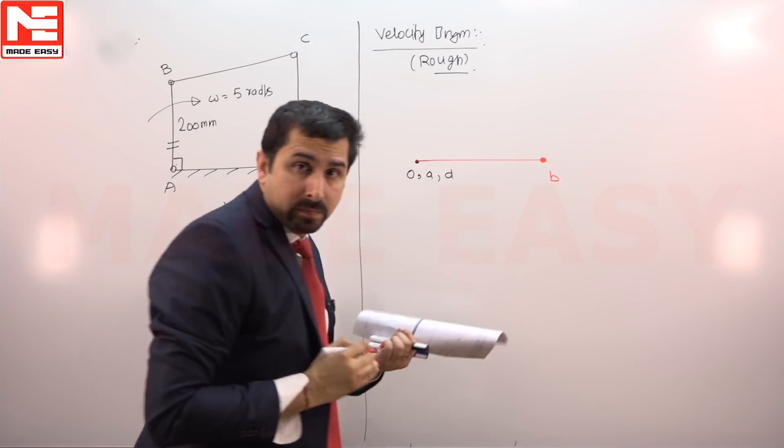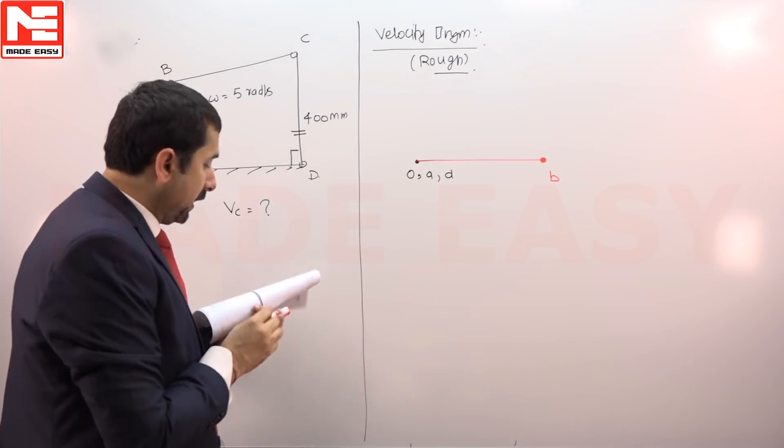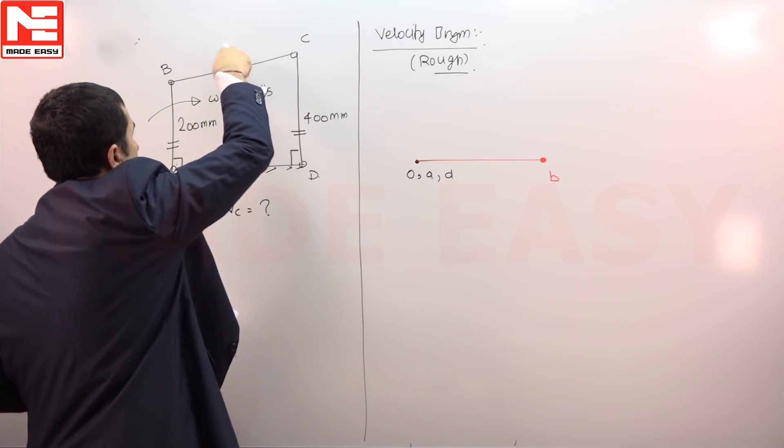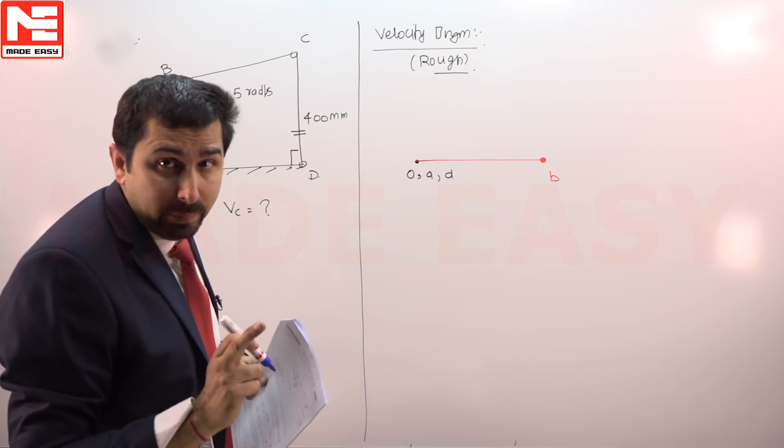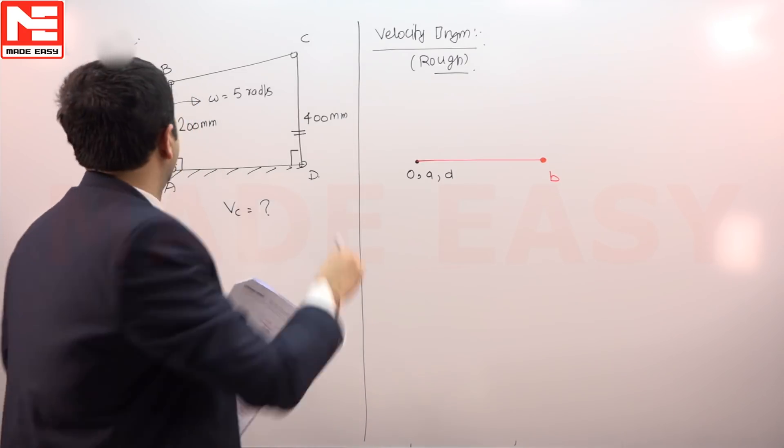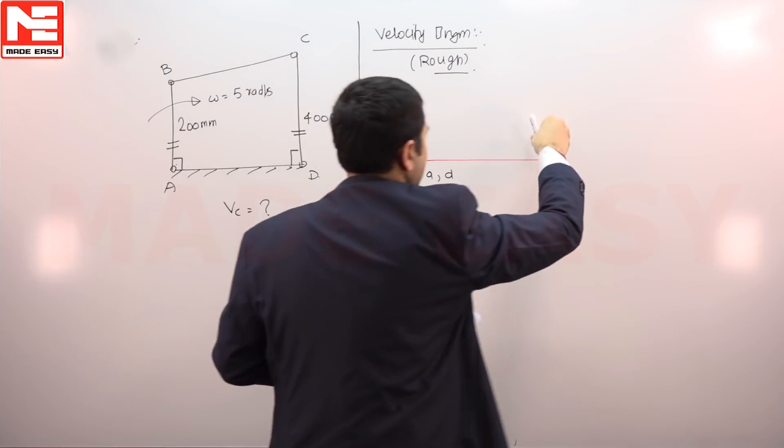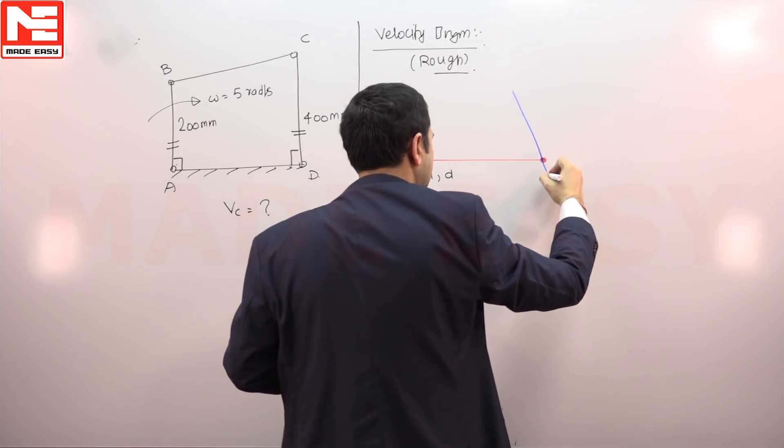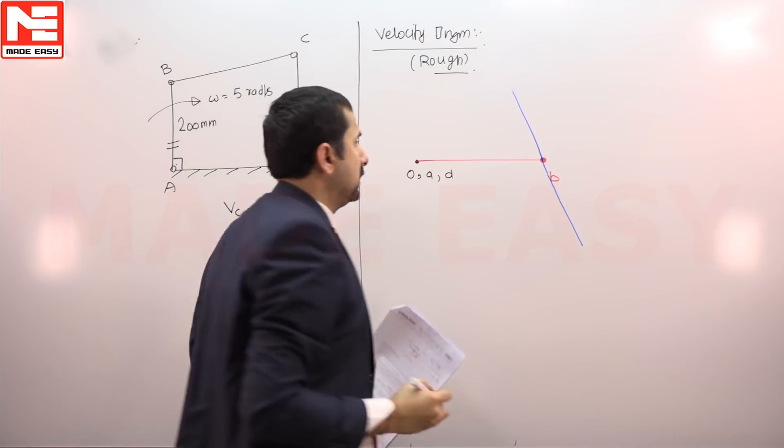With respect to B, when we are going to observe C, it is BC link perpendicular. Because the point C velocity with respect to B will be in the direction perpendicular to link BC, it will be exactly perpendicular to this line. The C should be there.